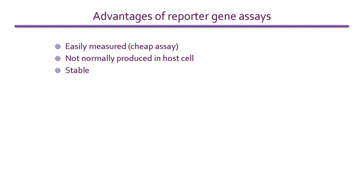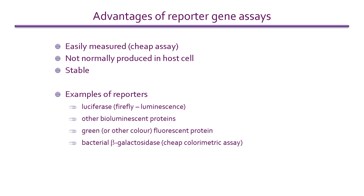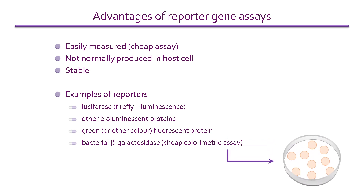The example on the last slide used luciferase as the reporter, but many other reporters are available, including a range of bioluminescent and fluorescent proteins. Bacterial beta-galactosidase is commonly used because it can be measured using a cheap colorimetric assay. When X-gal is added to the cells, the enzyme converts it to an easily detected deep blue compound. This variety of reporter properties makes the simultaneous use of two reporters very practical.